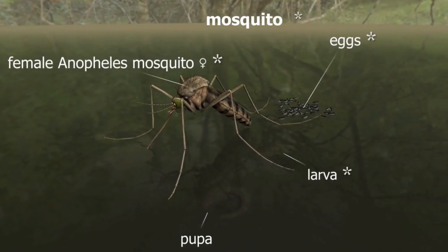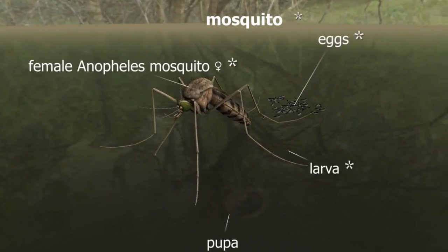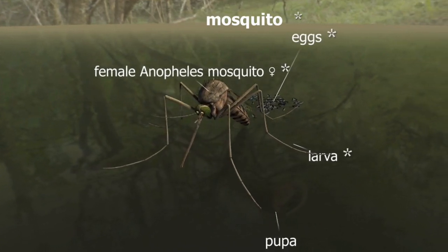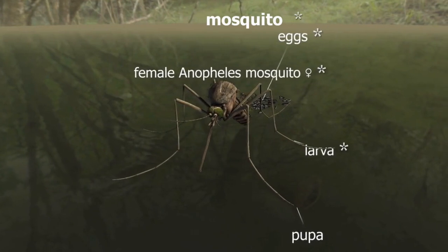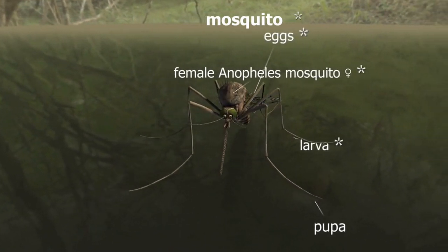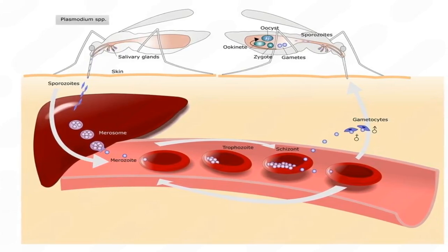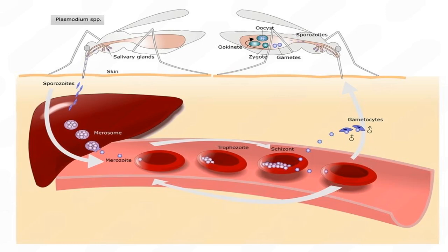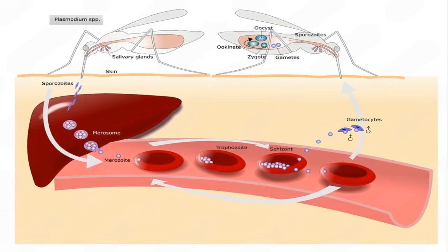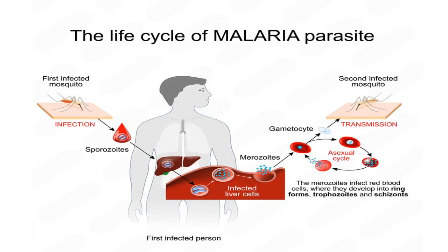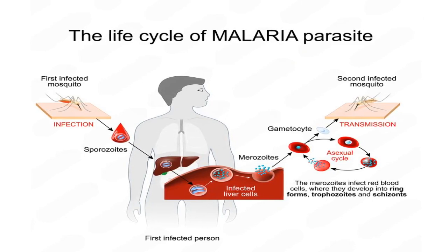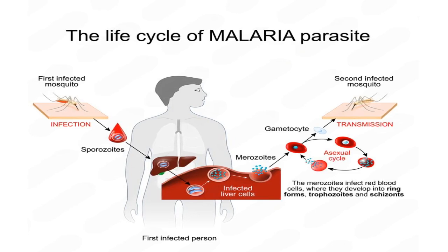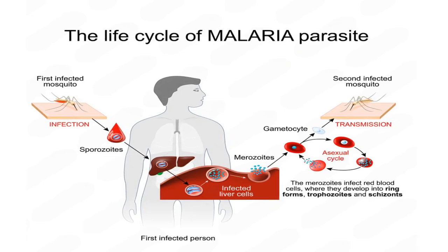Number 4. What do you know about the life cycle of the malaria parasite? The life cycle of the malaria parasite, plasmodium species, involves two hosts: humans and female Anopheles mosquitoes. In the human cycle, or asexual cycle, when an infected mosquito bites a human, it injects sporozoites into the bloodstream, which travel to the liver. There, they invade liver cells, develop into schizonts, and release merozoites into the bloodstream. These merozoites invade red blood cells, where they multiply, causing the red blood cells to rupture and release more parasites, leading to malaria symptoms like fever and chills. Some merozoites differentiate into gametocytes, the sexual forms of the parasite.